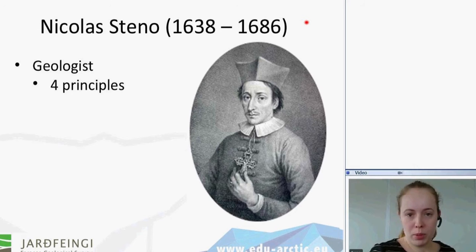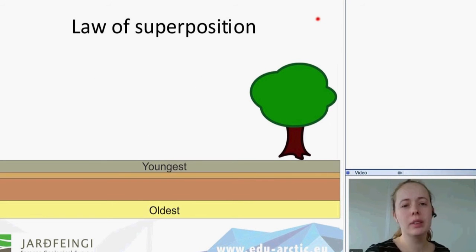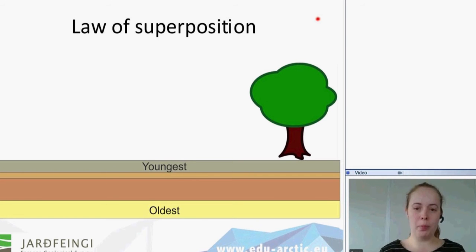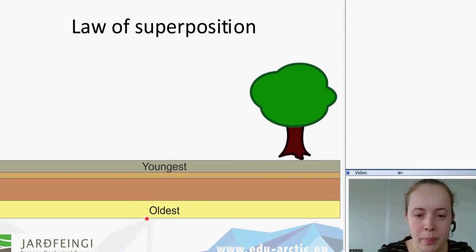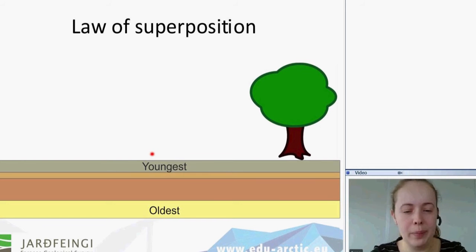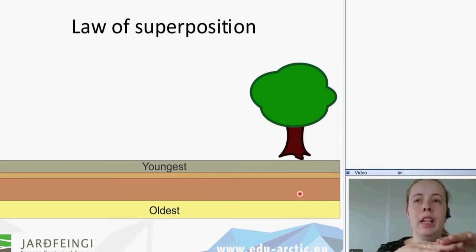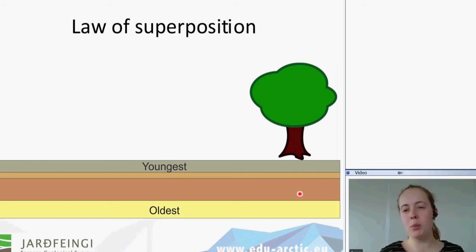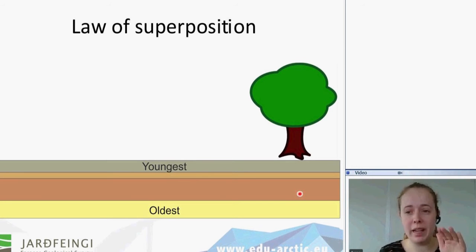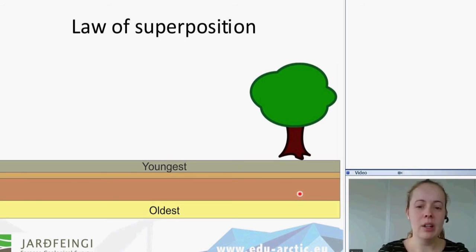The first principle is called the law of superposition. What is important here is that the layer at the base is the oldest and the layer at the top is the youngest. In between the layers — say, the yellow layer and the brown layer — we can have what is called a hiatus, which is when we have either no deposition from a time span, or we had erosion of some sediments that used to be there.